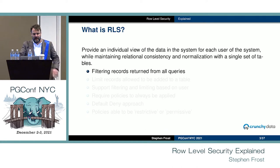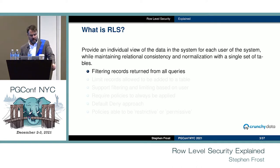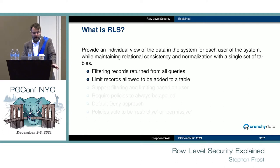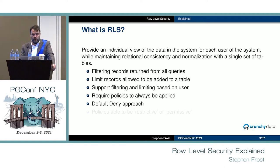What is row level security? The idea behind row level security is to have an individual view of the data in the system — those tables, rows typically — so you can have a subset of a table be visible to you. One big point: we still maintain all of the relational consistency and normalization within those tables. It filters all records returned from all queries, and you can also limit what records are able to be added to a table.